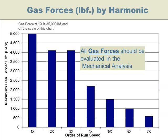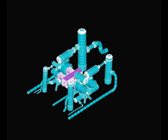The cylinder gas force is made up of different harmonics, meaning the vibration can occur at different orders of compressor run speed. This chart illustrates the amplitude of the gas forces at different frequencies or orders of run speed.